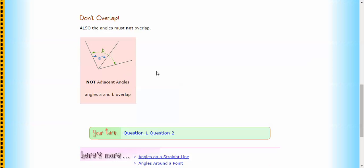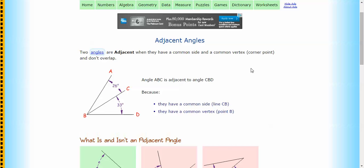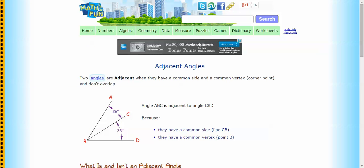These two obviously are because they share this line in the middle. These are not because they don't share that line in common. And they don't overlap. They've actually got to be separate ones. So that's a little bit harder what an adjacent angle is, but thanks to the Math is Fun people we now know how that works.